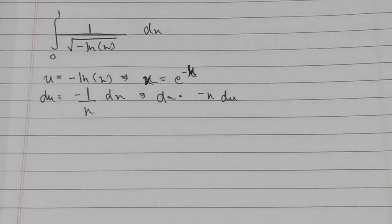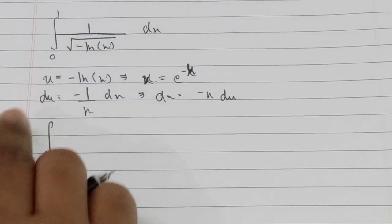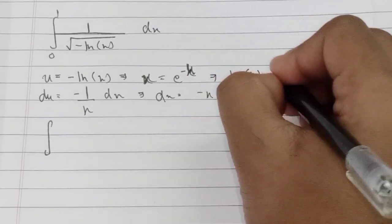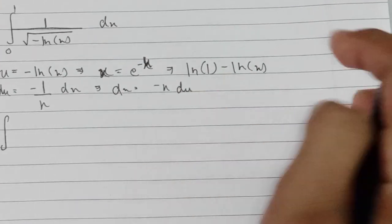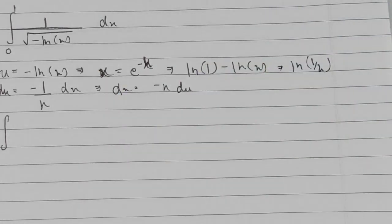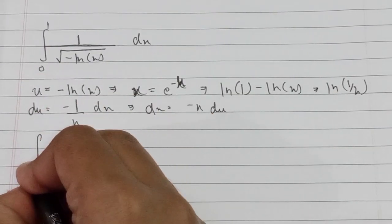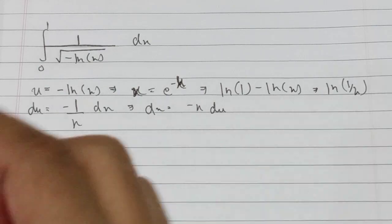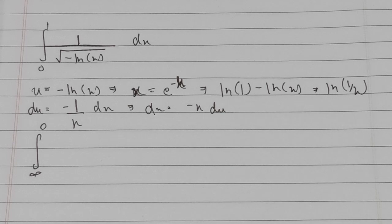Now we change the limits. The original lower limit is 0. Since we have negative ln of x, we can write this as ln(1) minus ln(x), which equals ln(1/x). When x approaches 0, ln(1/x) approaches positive infinity. When x equals 1, ln(1/1) equals 0. So the new limits are from infinity down to 0.